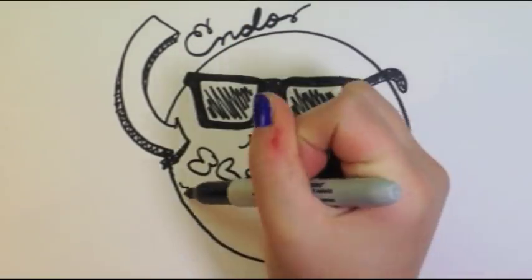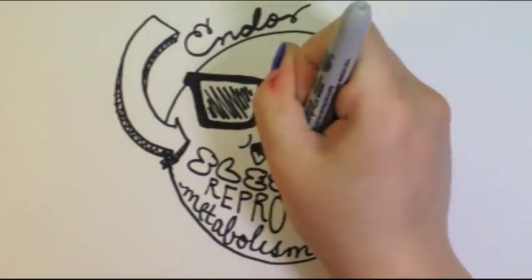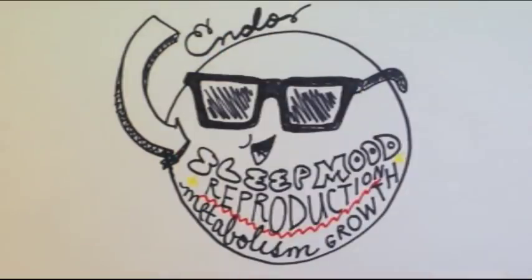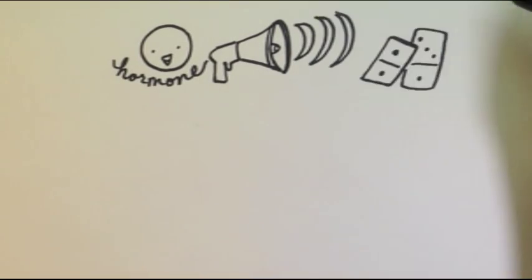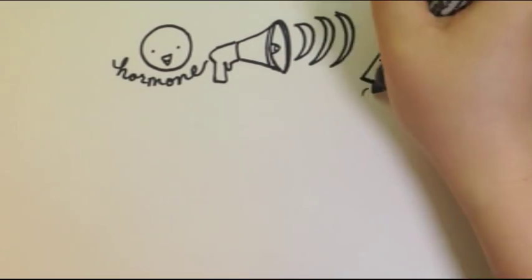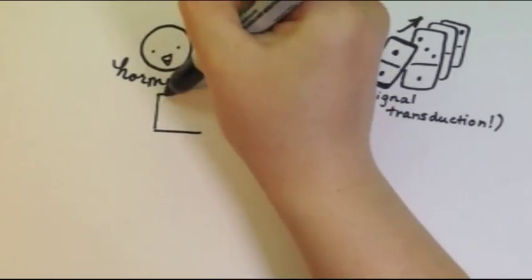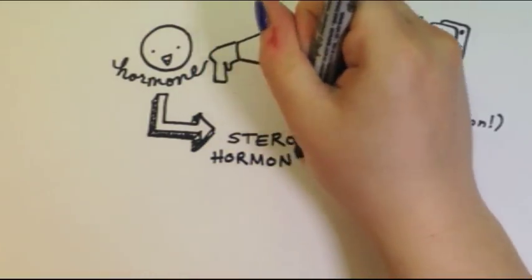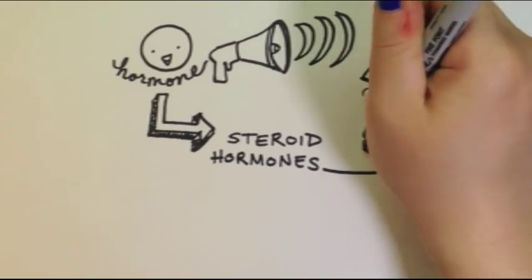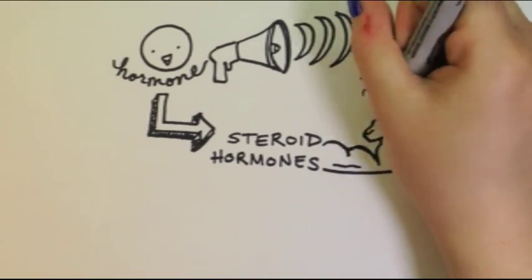So hormones are signaling molecules. When hormones bind to their specific receptor on a target cell, a signal transduction pathway is activated. One class of hormones is the steroid hormone class. Natural steroids are synthesized from cholesterol, so they're pretty lipid soluble and can therefore diffuse through the cell membrane and bind to nuclear receptors.